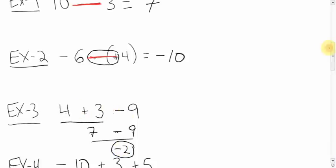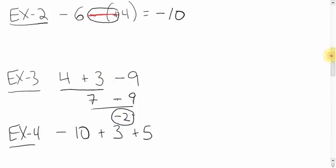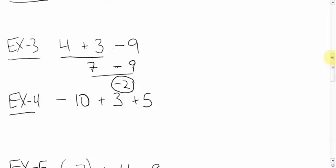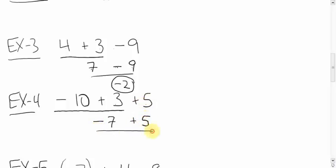Here's another question: -10 + 3 + 5. Go left to right — do -10 + 3 first. You're down 10, you're up 3, you are down 7. Bring down the plus and the 5. Now -7 + 5: you're down 7, you're up 5, you are down 2. Negative 2 is your answer.